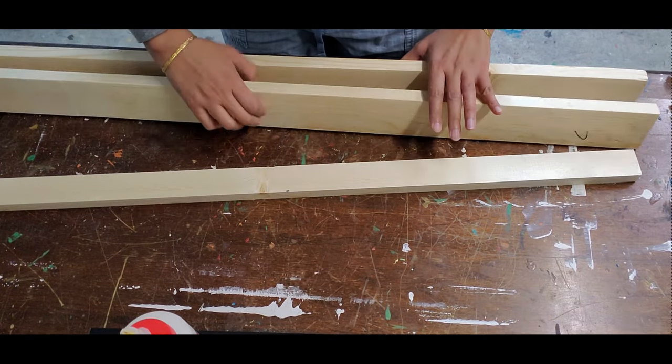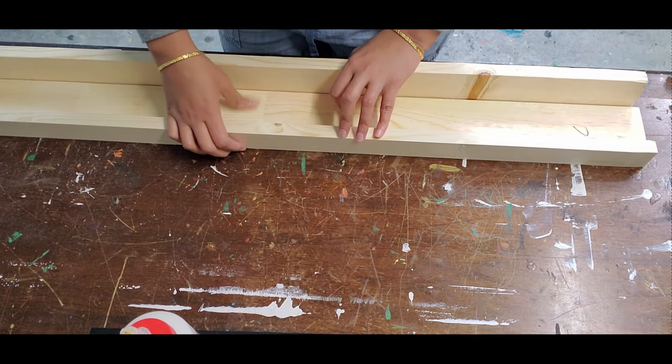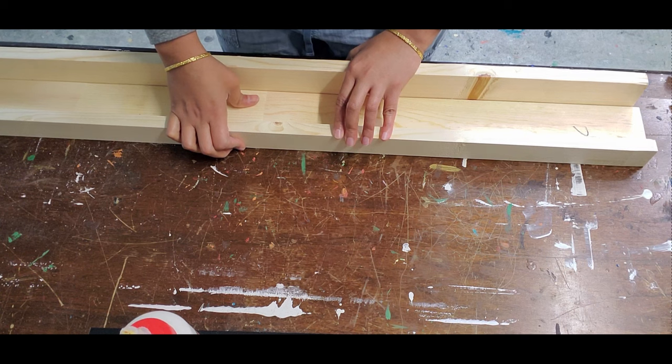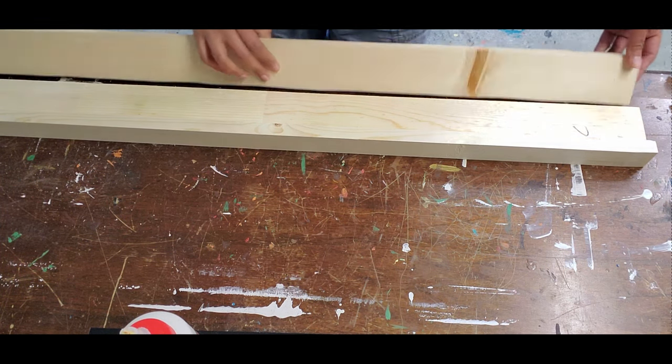Now, we are just going to attach all these boards in a particular way. The 1x2 inch wooden board goes on the front side. The 1x4 inch wooden boards go to both the bottom horizontally and the back vertically.